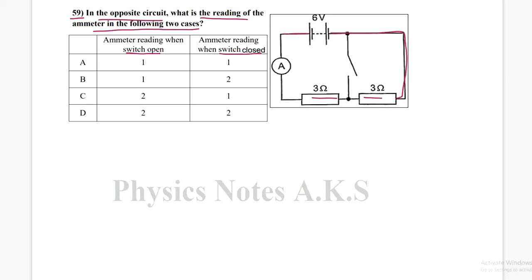They are on the same line. We're talking about when the switch is open. The ammeter reading: I equals V/R. V is 6, and R is the total of 3 and 3.